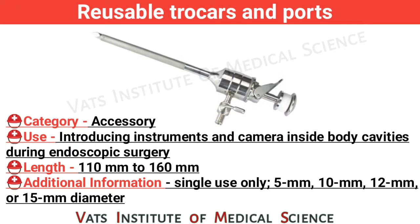Reusable trocars and ports. Category: accessory. Use: introducing instruments and camera inside body cavity during endoscopic surgery. Length: 110 mm to 160 mm. Additional information: single use only, available in 5 mm, 10 mm, 12 mm, or 15 mm diameter.